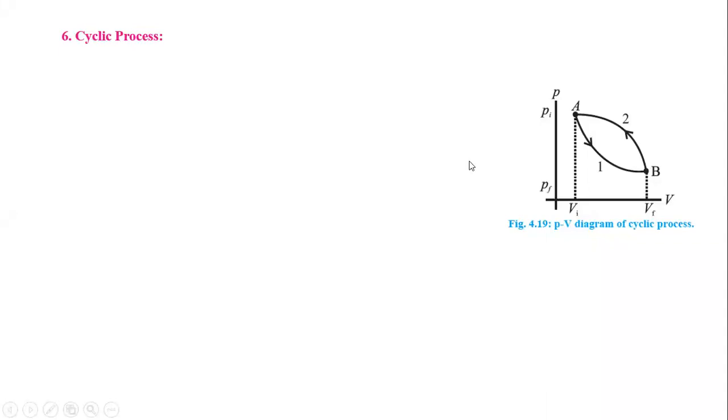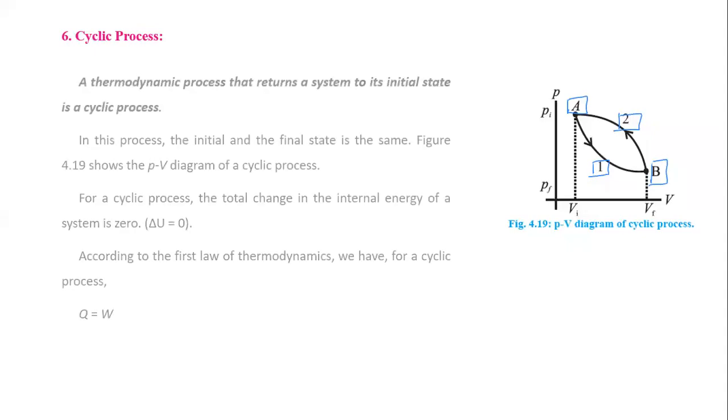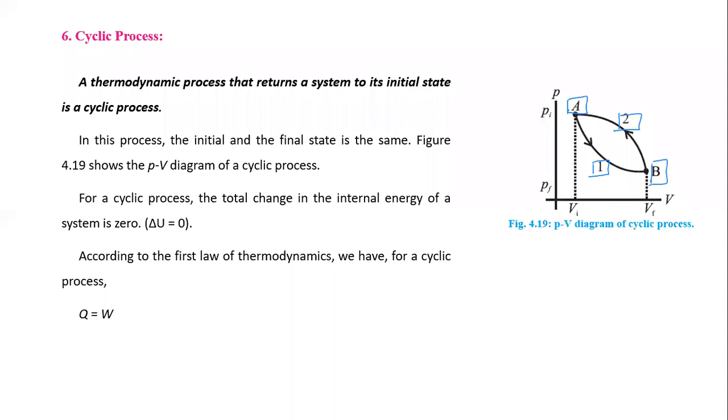The next thermodynamic process is the cyclic process. On the PV diagram for a cyclic process, A is the initial state and this is the final state. From A to B we reach the final state by path one, and then we return to A — possibly by the same path or a different path. The thermodynamic process that returns the system to its initial state is called a cyclic process; in this process the initial and final states are the same.